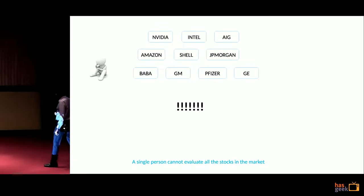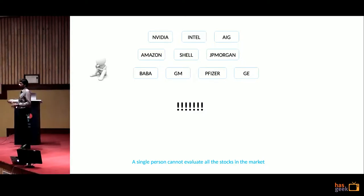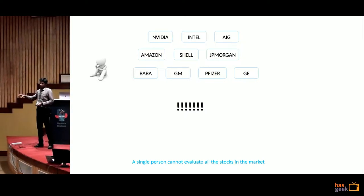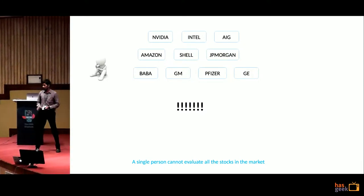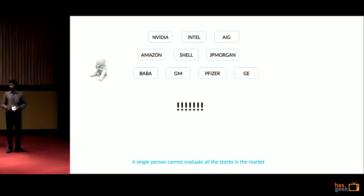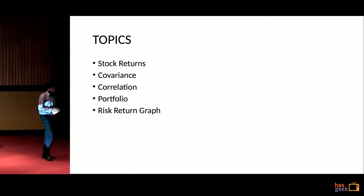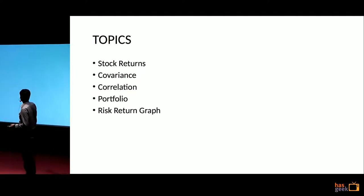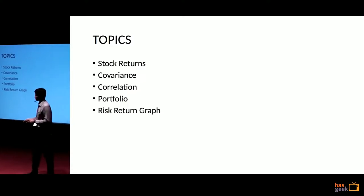There are around 100,000 stocks in the world, and it is difficult for an analyst to understand all of them. Some knowledge graph areas are trying to solve this problem, but they are not completely up to the mark yet. So we are still relying on statistical methodologies. Today I'll quickly cover the basics of finance — stock returns, covariance, correlation, portfolio risk-return graph — and then move on to deep learning methodologies.